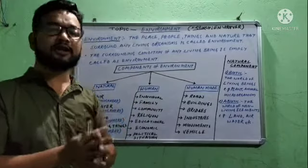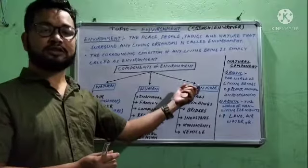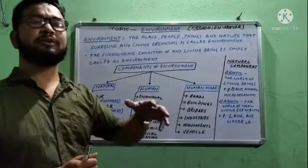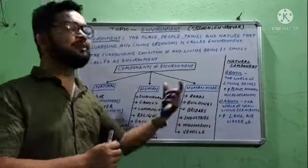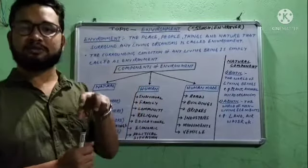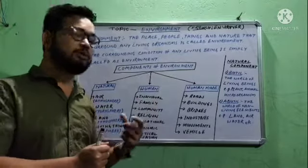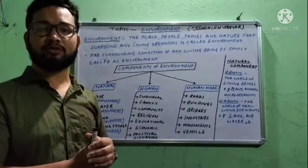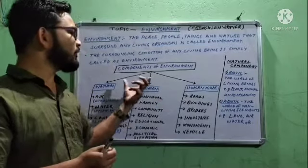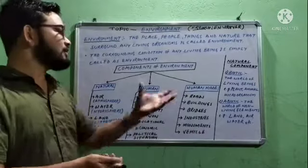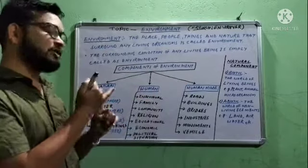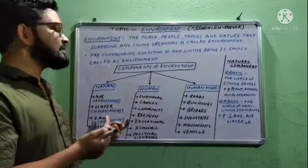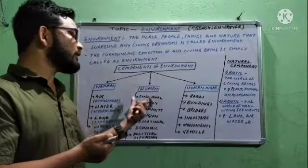So if you look at your surroundings, you will see these three types of things in the environment. Natural components — like plants, a dog, or a cat. Human-made components — houses, buildings, roads, vehicles. And human components — a person or your family nearby. These are all components of environment. You should remember there are three components: natural, human-made, and human, each with their own examples.